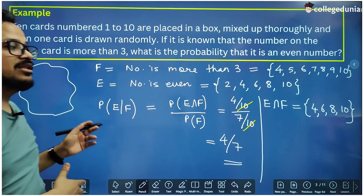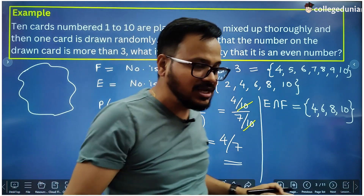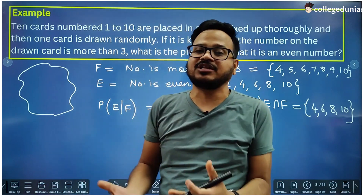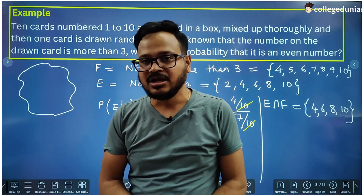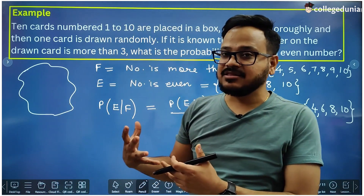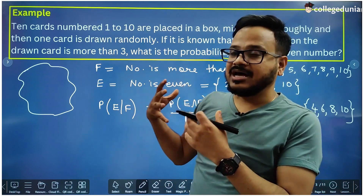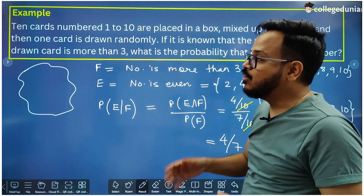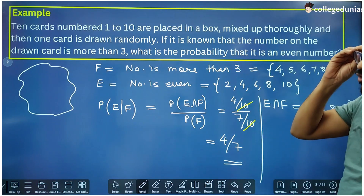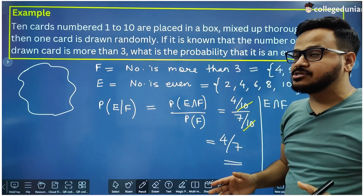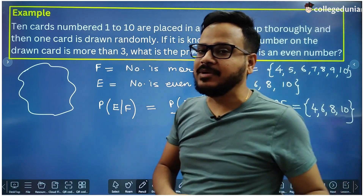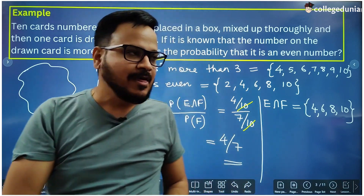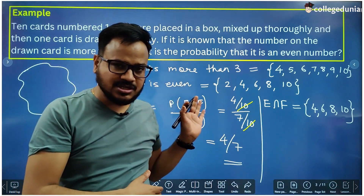This is how you can find the conditional probability. It is a very important topic in class 12 probability because everything starts from conditional probability — it is the first exercise in class 12 mathematics, chapter probability. You have to understand this concept very deeply; only then will you be able to do the questions of the coming exercises. I will meet you in the next lecture.